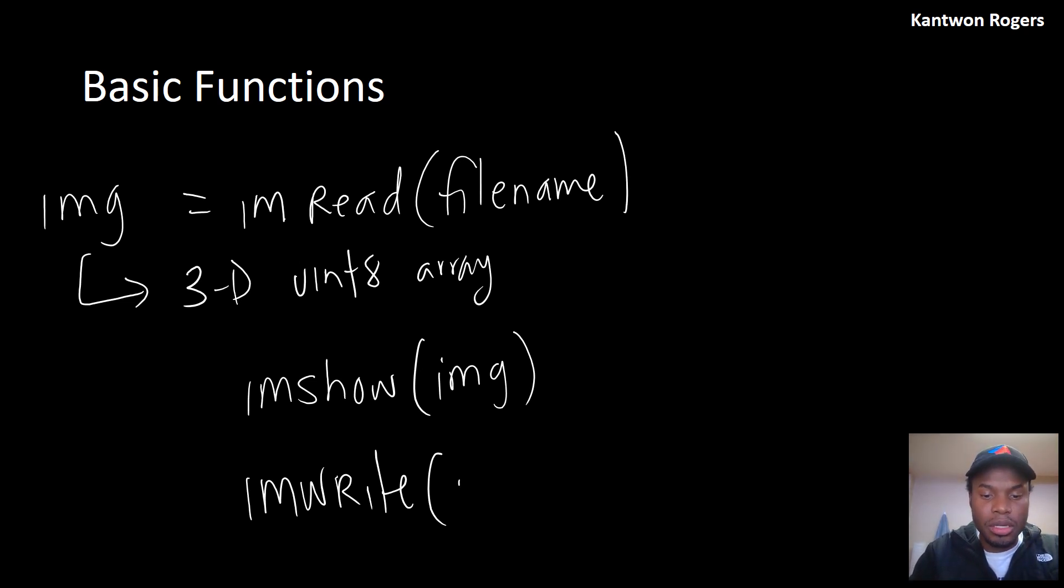This takes in the image array and then the filename that you want to create. In this case, this would be the image array and then the new filename. This also doesn't have an output. It just creates this file that's going to have your beautifully new constructed image. Those are really the only three functions, the three new functions that you need to know with images.